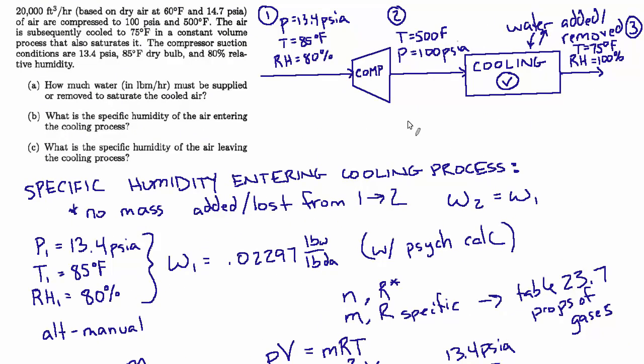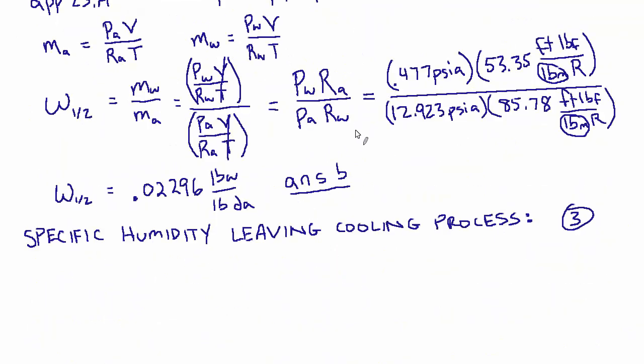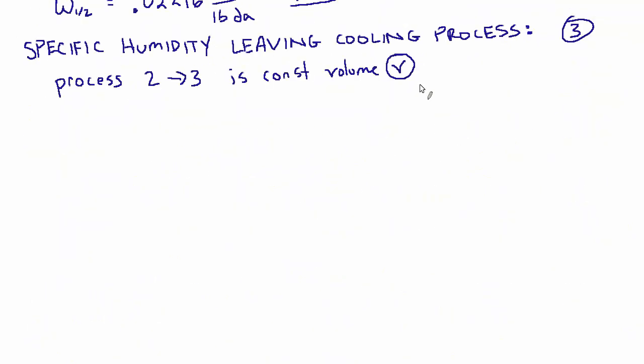So now that we've worked out the specific humidity of the air entering the cooling process, now we want to look at the specific humidity of the air leaving the cooling process. So that's this state three. And the thing to note here is that the cooling process is constant volume. So as we go from state two to state three, that's a constant volume process. And since we're willing to treat air and water as ideal gases, as we showed in the previous part, we're going to continue to do that. And we can use some of the properties of ideal gases to help us figure out how to better define state three.